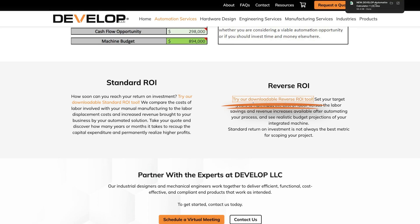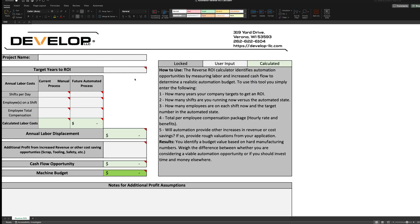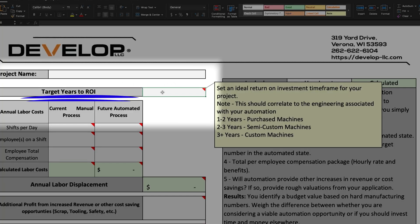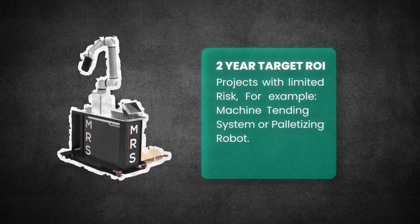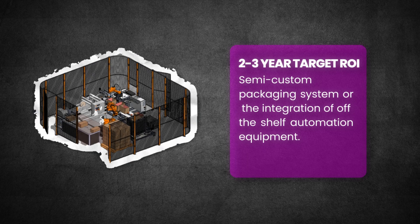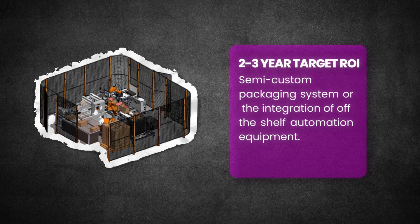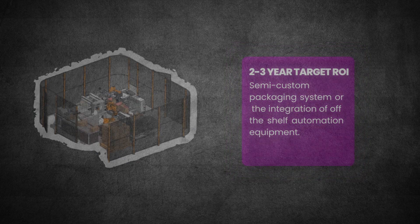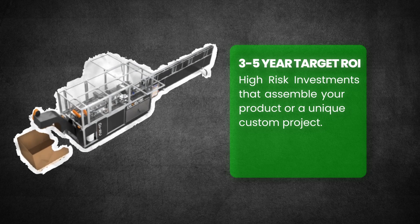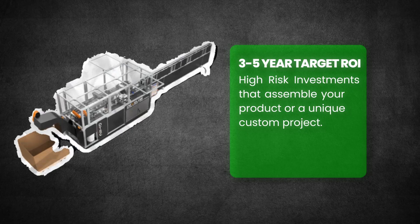Now that you have opened the calculator, it's good to note that many of the cells do not require input. The first cell to fill in is the target years to ROI. For projects with limited engineering risk, like a machine tending system or palletizing robot, you might target two years. For a semi-custom packaging system or integration of many off-the-shelf pieces, you might consider two to three years. For higher risk investments like assembling your product or processing something unique to your business, we recommend planning on three to five years for an ROI.